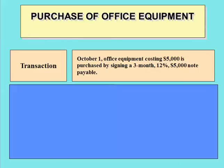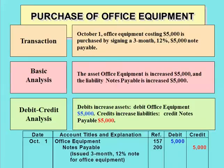On October 1st, office equipment costing $5,000 is purchased by signing a 3-month, 12%, $5,000 note payable. Office equipment is being purchased, but instead of paying cash, we're signing a note payable, so liabilities go up by $5,000. The way we increase liabilities is with a credit. In exchange for the equipment, we sign the liability — so we bring an asset into the business. Debit office equipment $5,000, credit notes payable $5,000. That's exactly what you see in the journal.